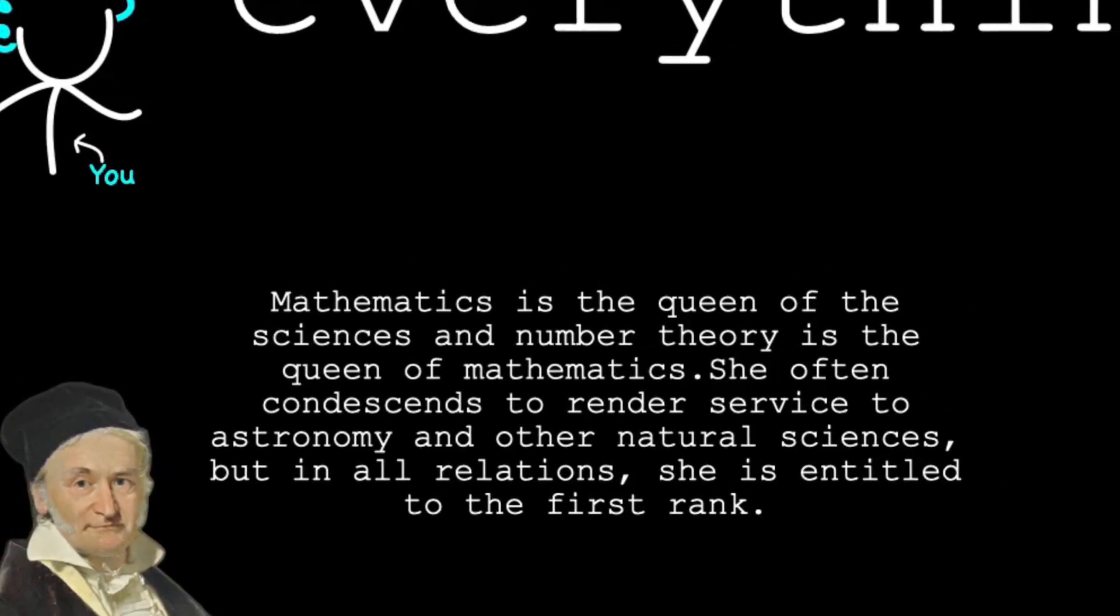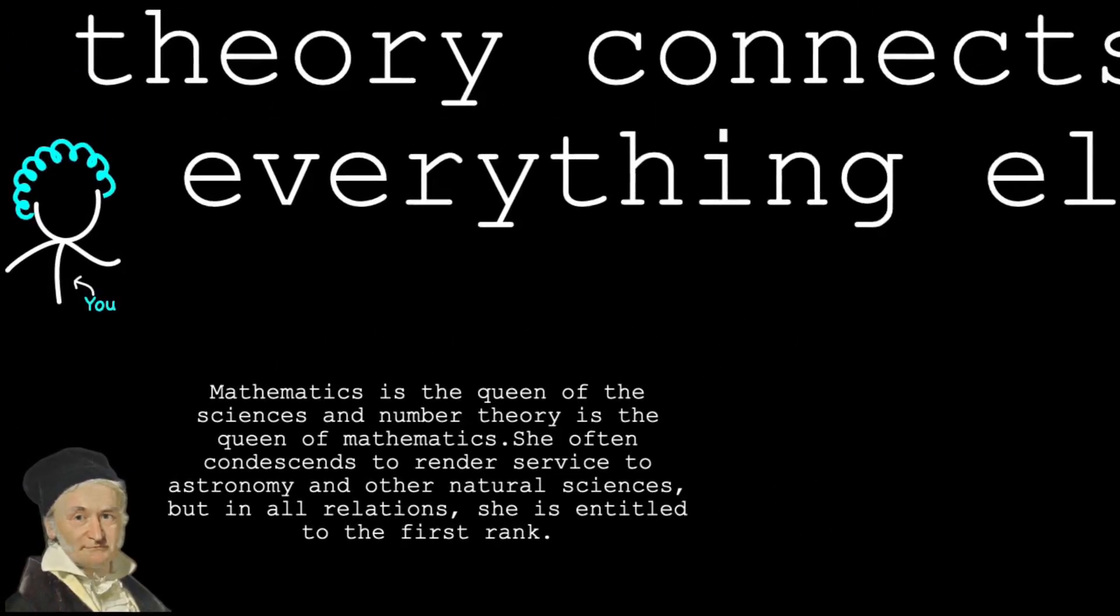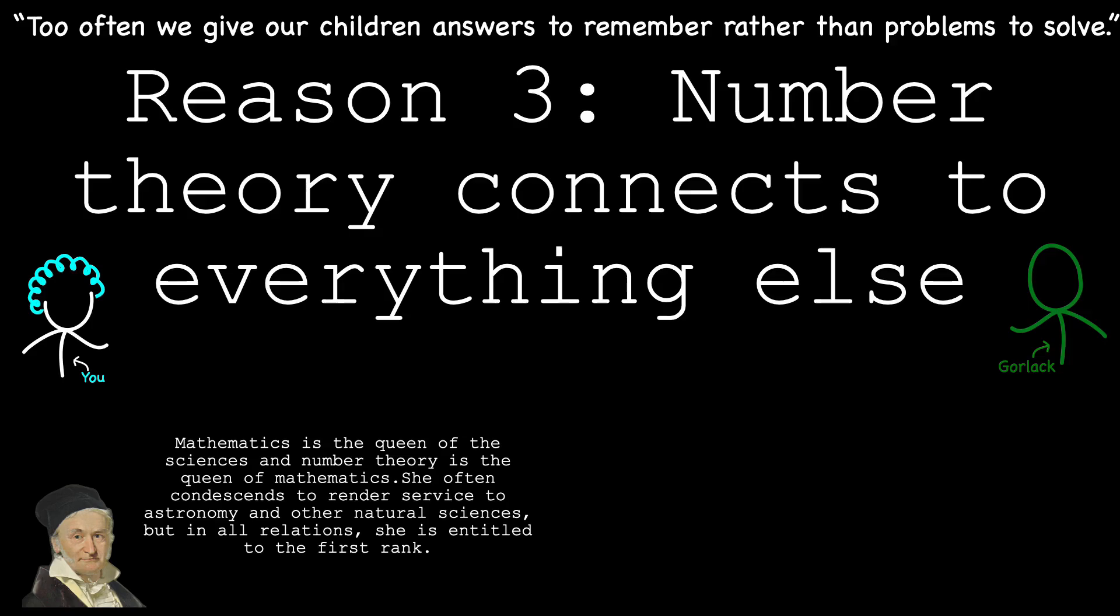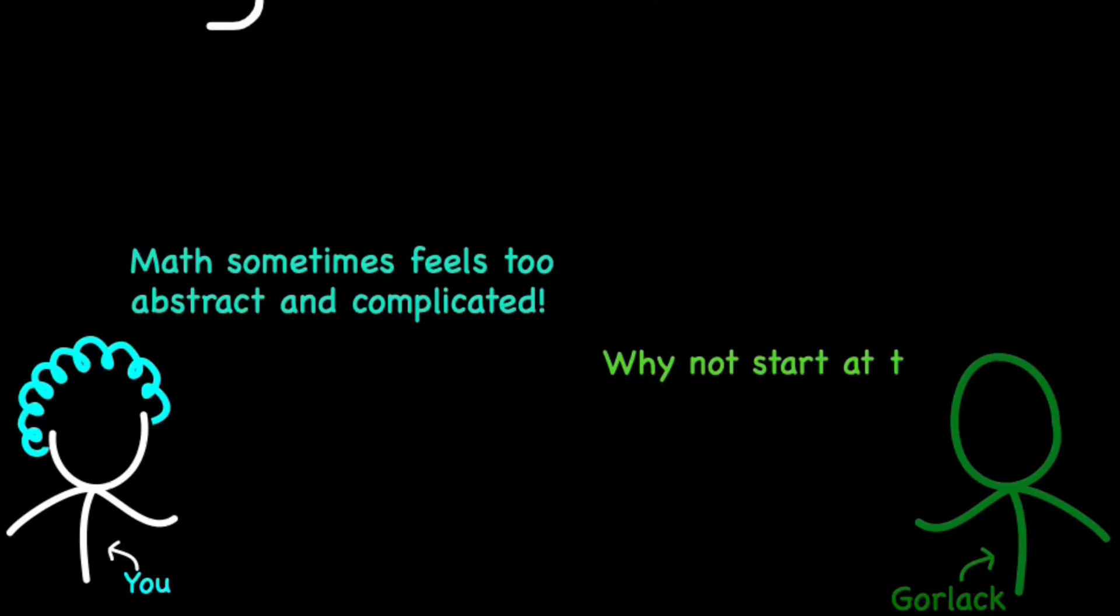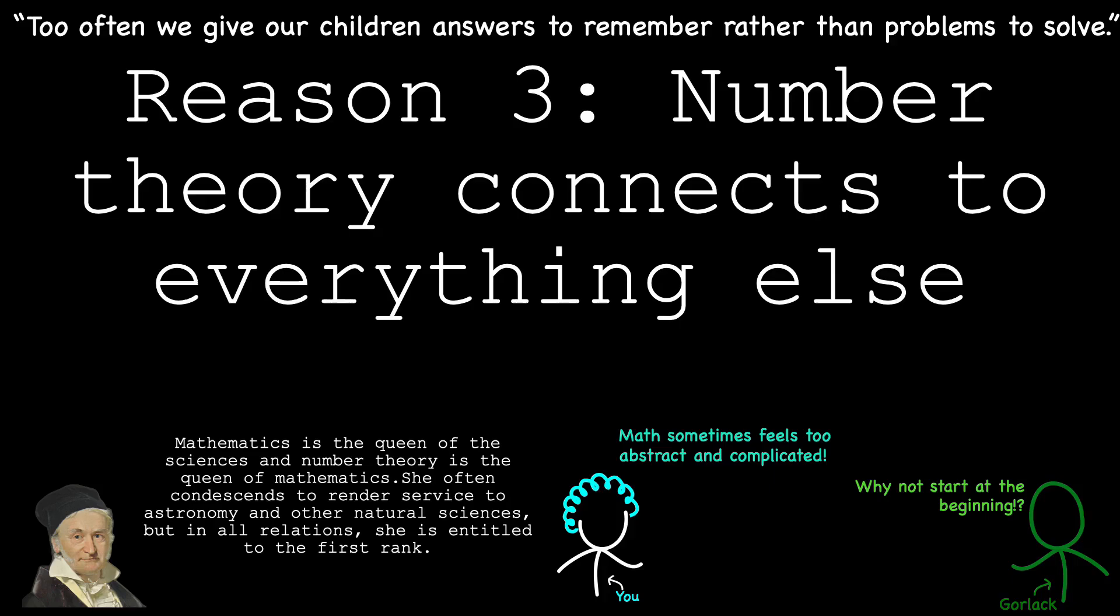Take Fermat's last theorem, for example. Solving this long-standing puzzle required mathematicians to develop entirely new areas of mathematics, like modern algebraic geometry. Or consider the advances in abstract algebra driven by attempts to better understand number theory. What begins as a study of simple numbers often leads to deep, abstract mathematical ideas. So, if parts of mathematics feel too abstract or disconnected, why not start with something as simple as counting? As history shows, a journey that begins with numbers can lead to surprising and delightful destinations.